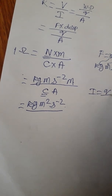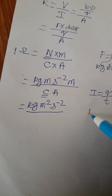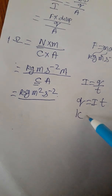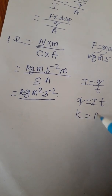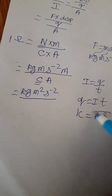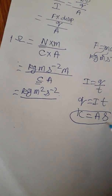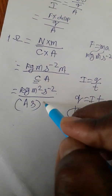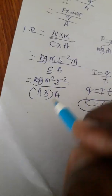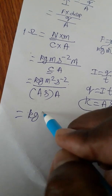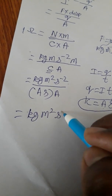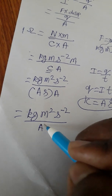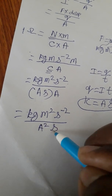Current is equal to charge by time, so charge is equal to current into time. Charge SI unit is coulombs, current SI unit is ampere, time SI unit is second. So instead of writing coulombs, we can write ampere into second — ampere·second·ampere — giving us kg·m²·s⁻²·A²·s in the denominator.